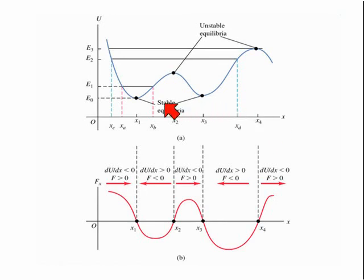First of all, at x1 and x3, we have stable equilibrium points. The gradient of the potential energy function is zero, and therefore the force is also zero.